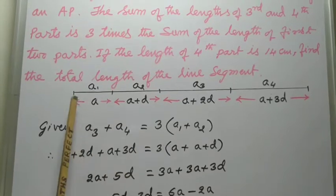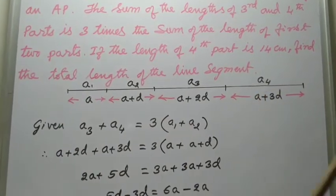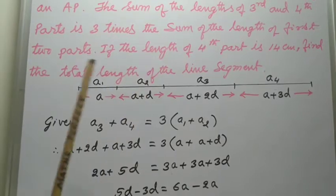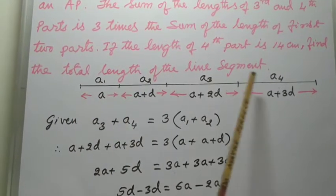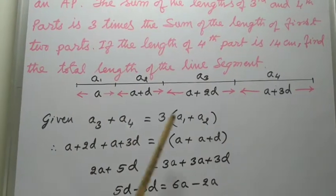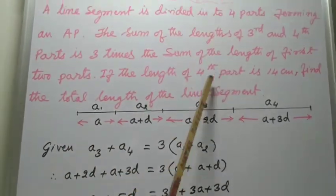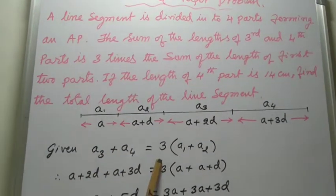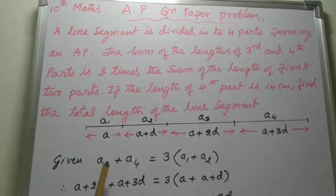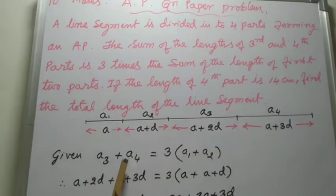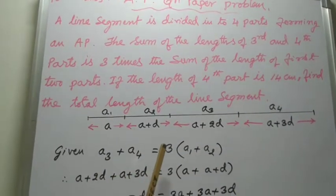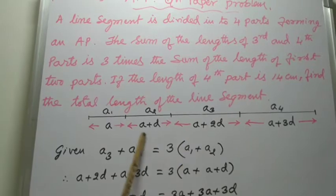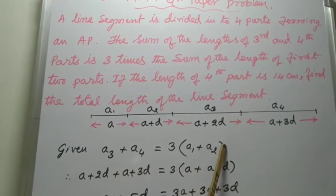I have written this diagram only for your sake to understand the problem. Actually, this is not necessary. If you understand the problem by reading, you can start from this point only. The sum of the third and fourth terms equals three times the first and second terms.